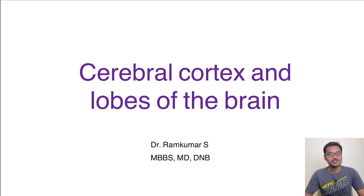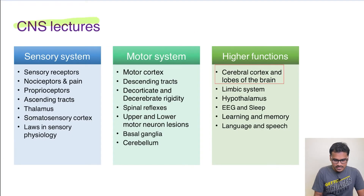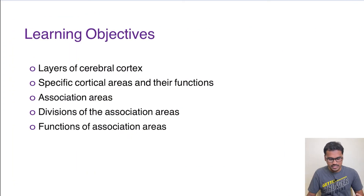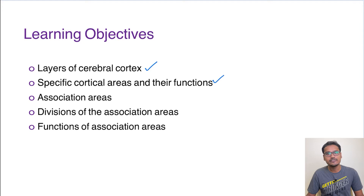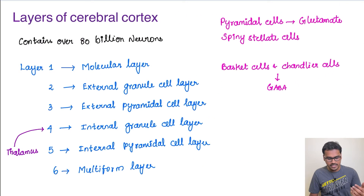Welcome to Physiology Learning. Today we are going to see a very interesting topic: the cerebral cortex and the various lobes of the brain. We are discussing CNS lectures, starting with the most important topic — higher functions. Our learning objectives today include the various layers of the cerebral cortex, specific cortical areas and their functions, association areas, divisions of association areas, and the functions of all those divisions.